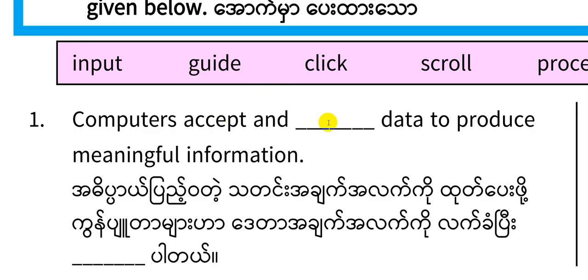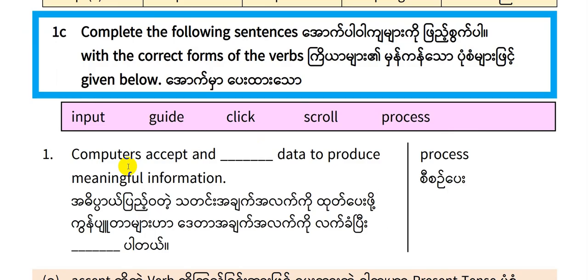If you want to use the verb in the infinitive form after 'accept and', you use the base form. Computers accept and process data to produce meaningful information.